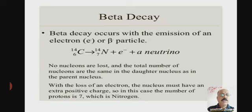Beta decay occurs with the emission of an electron or beta particle. For example, carbon-14 (C-14, atomic number 6) becomes nitrogen-14 (N-14, atomic number 7) plus an electron (beta particle) plus a neutrino. No nucleons are lost, and the total number of nucleons are the same in the daughter nucleus as in the parent nucleus.